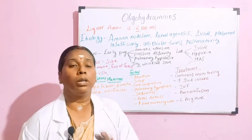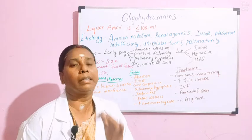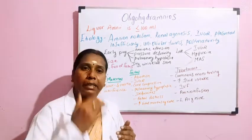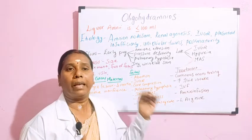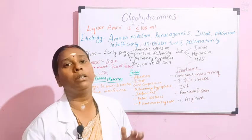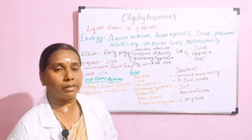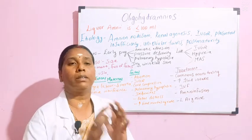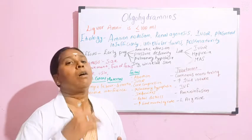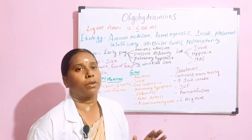What is oligohydramnios? As the term says, oligo means decreased. When the amniotic fluid level is decreased — either 100 ml or less than 100 ml — you term it as oligohydramnios. We had already discussed amniotic fluids in the polyhydramnios topic, so we will directly enter into oligohydramnios.